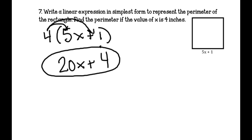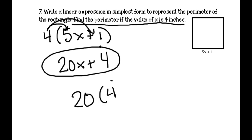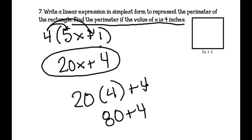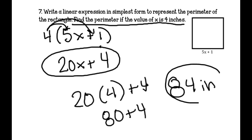Part B: find the perimeter if x = 4 inches. I plug in 4: 20(4) + 4 = 80 + 4 = 84 inches. Circle it — 84 inches is my answer.